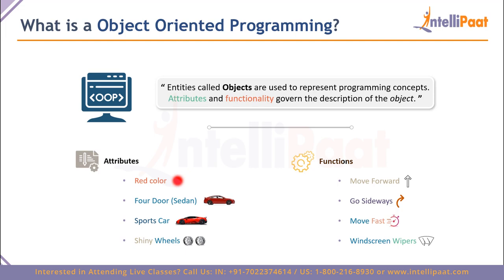The attributes describe what the car is: it's red, it has four doors making it a sedan, it's a sports car that goes fast, and it has shiny wheels. What the car can do is described by its functions: it can go forward, go back, go sideways, go really fast, move and stop, has windscreen wipers, and air conditioning. These functions describe the capabilities of the car — that's how an object is handled with attributes and functionality.